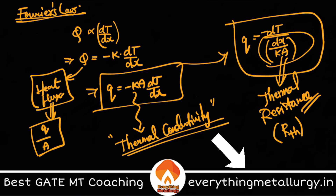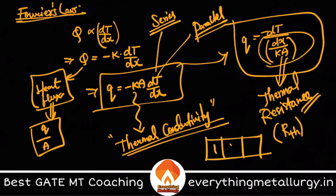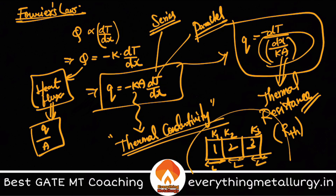By expressing the equation in terms of thermal resistance, you can assemble resistances in series or parallel. For example, if you have a large body made of three bricks joined together with different thermal conductivities k1, k2, k3 and different lengths, with temperatures T1 and T2 at the boundaries, you can calculate the overall heat flux through the system using series or parallel combinations of thermal resistances.